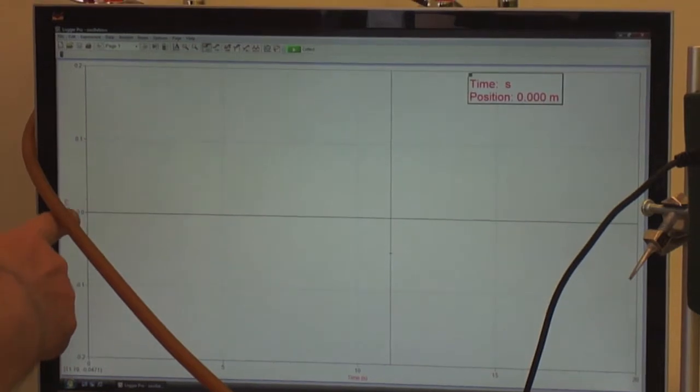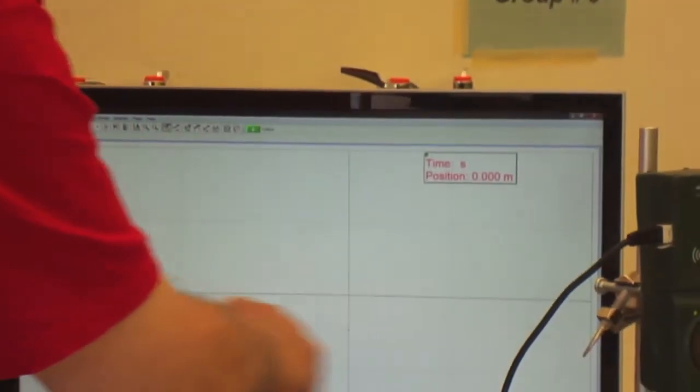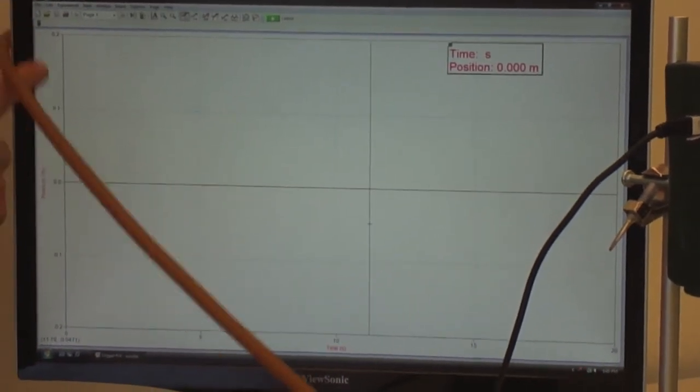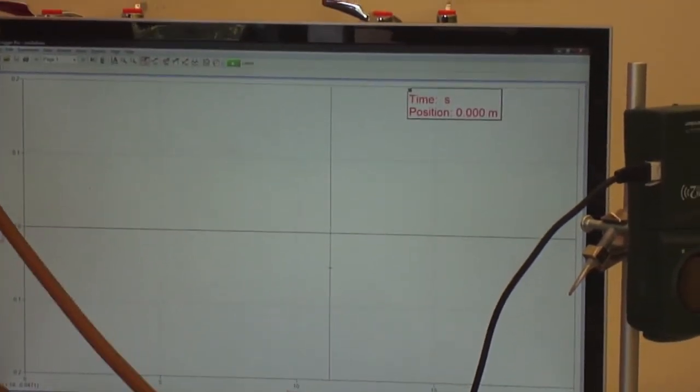And we click on file and open a template file called oscillations. You'll notice that the zero axis is to the center of the graph and there's positive numbers above the zero axis and below.